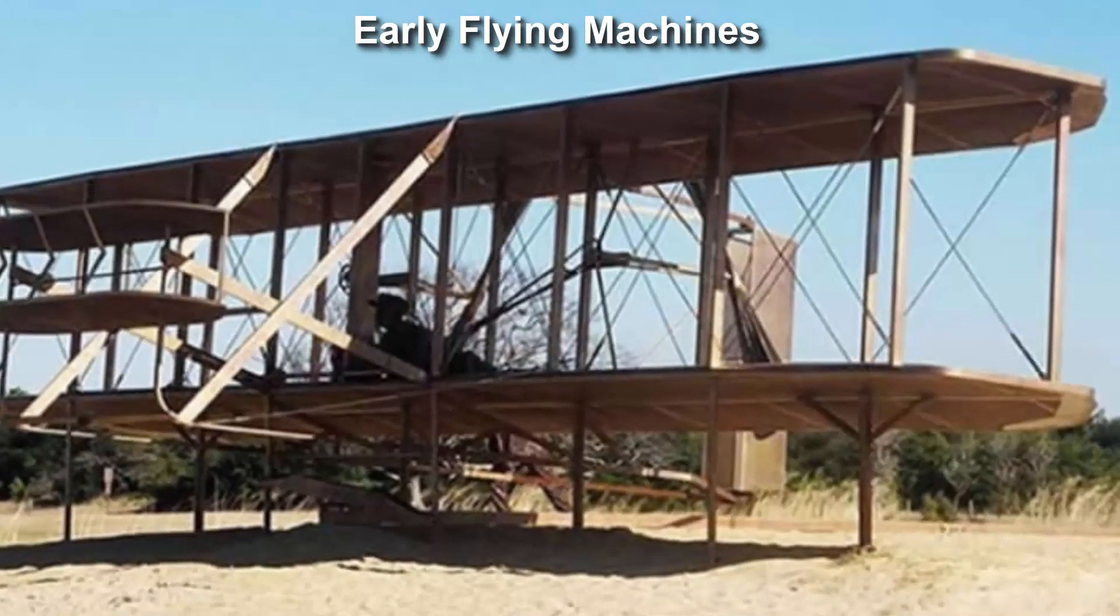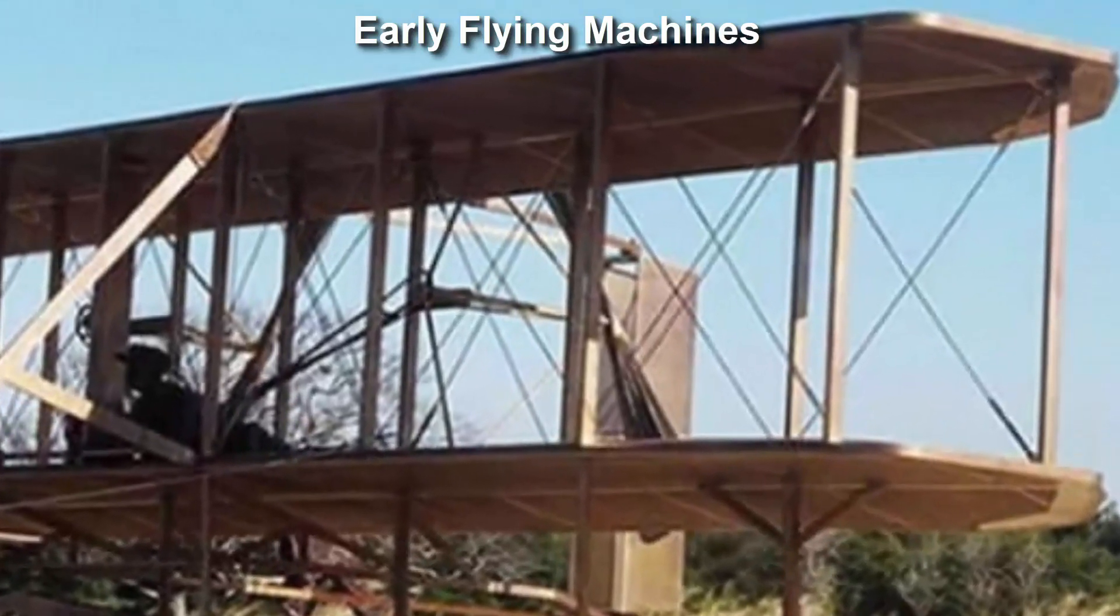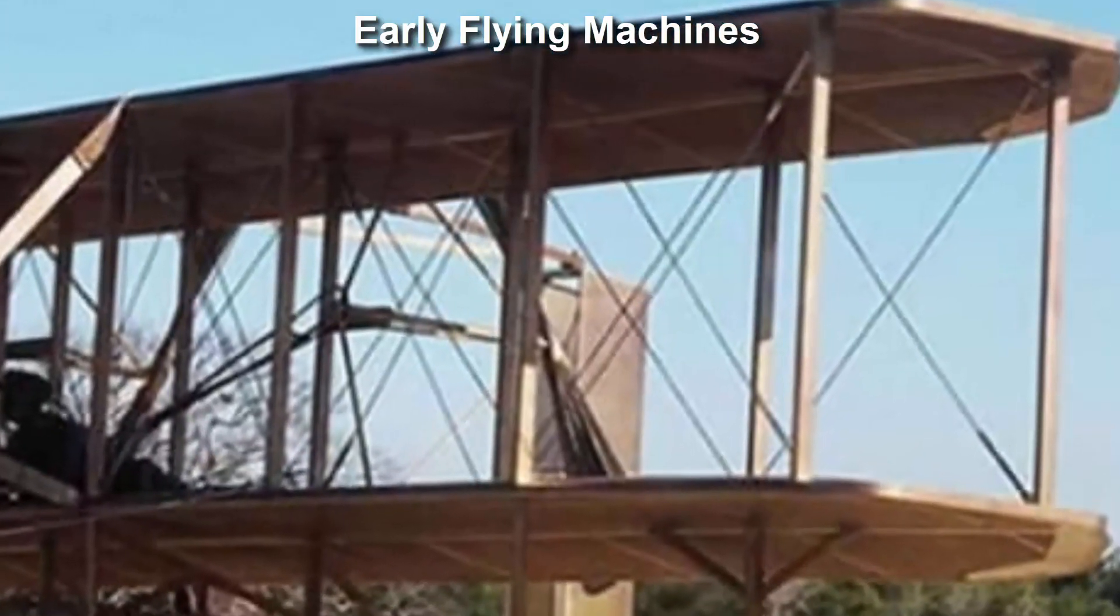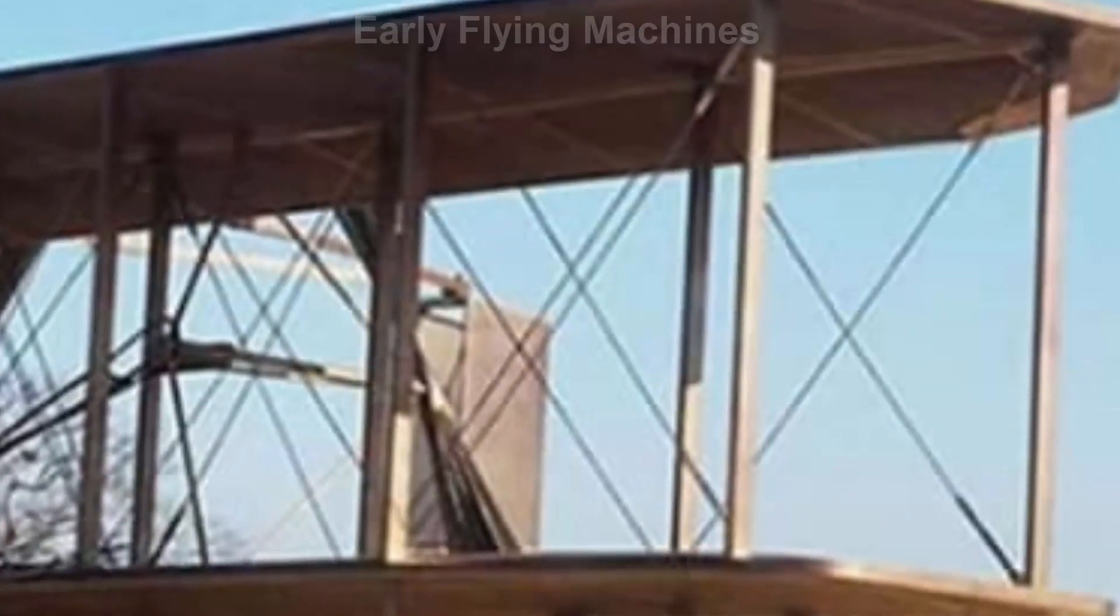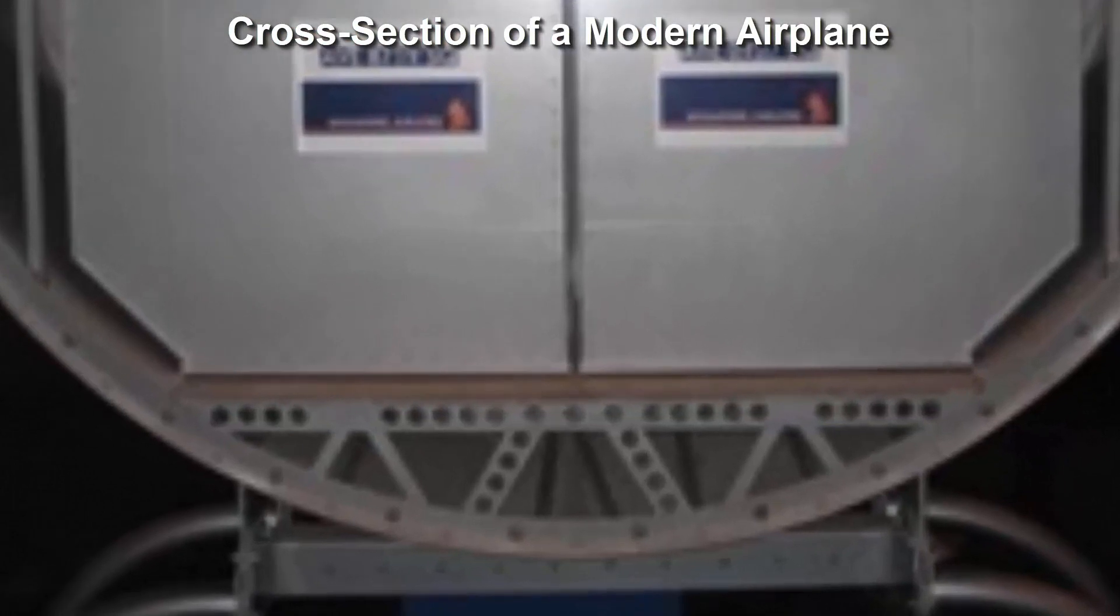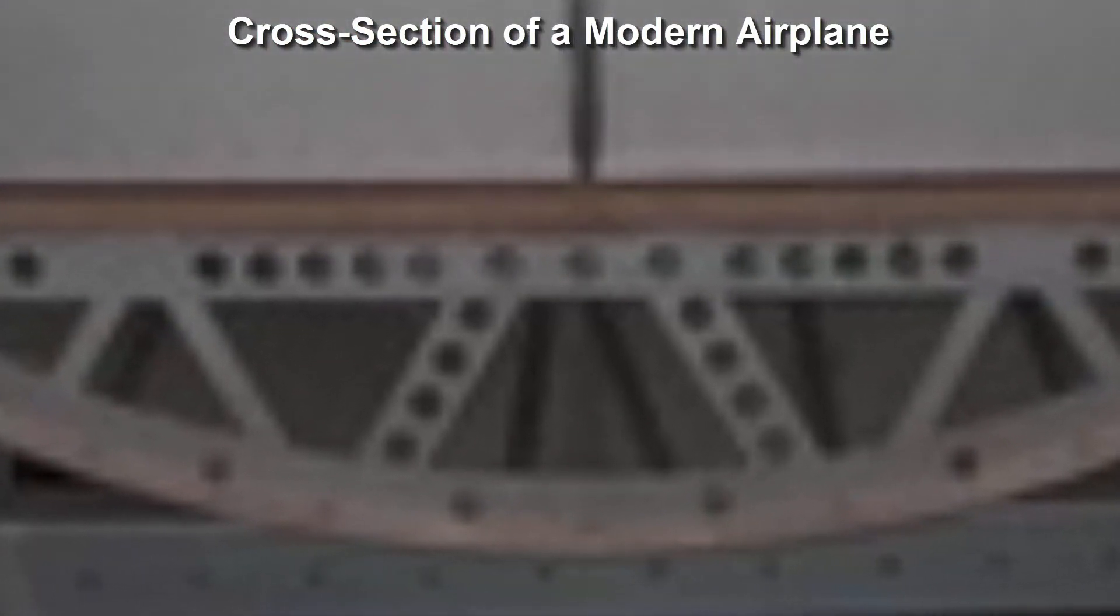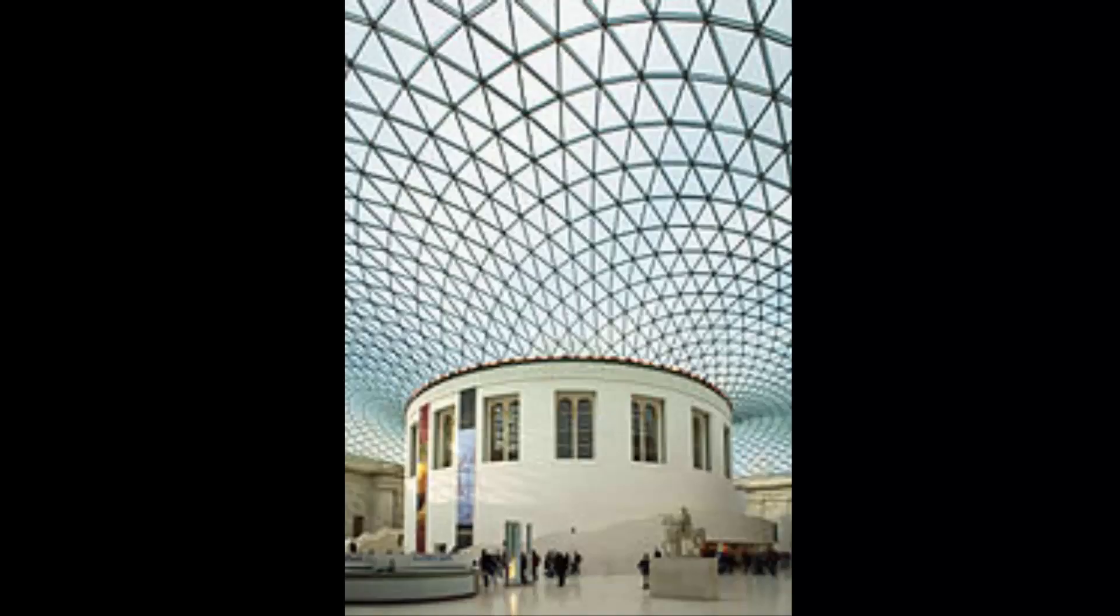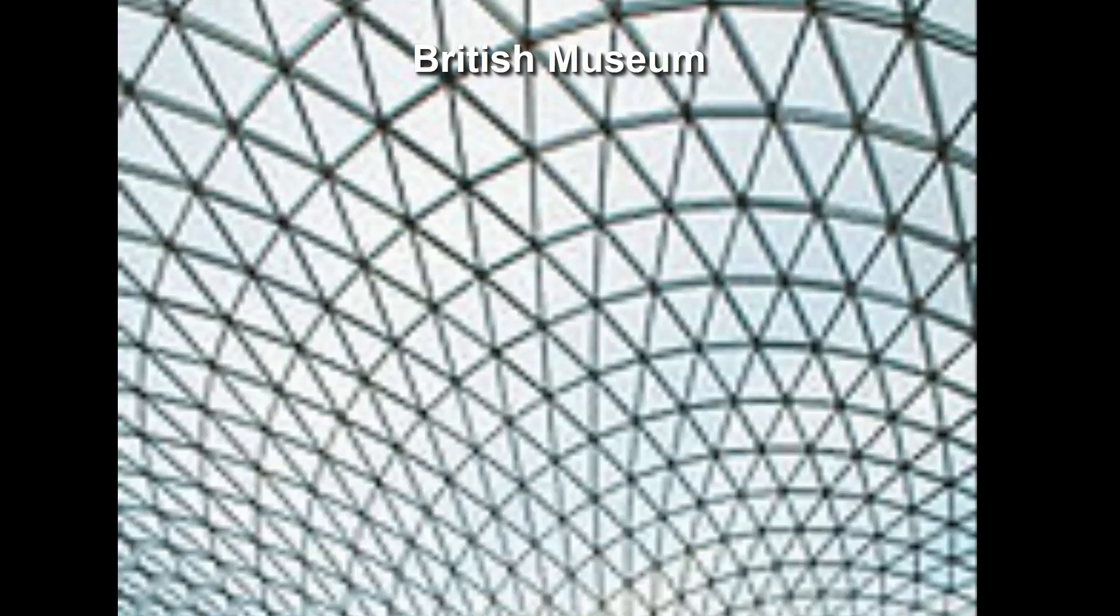Early structures and machines were made of wood and stones. Hence appropriate designs were developed to achieve stiffness and strength. However, this changed with the invention of new man-made materials. Despite many high performance materials, design has played important roles in making structures and machines lighter and stiffer.